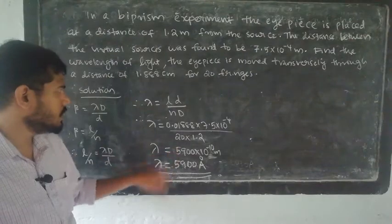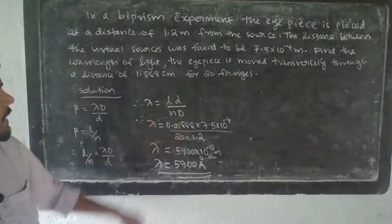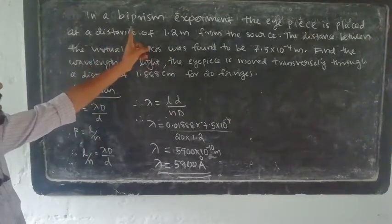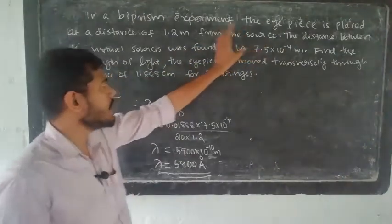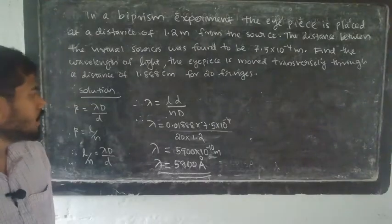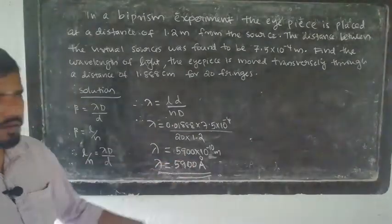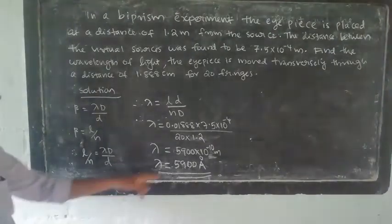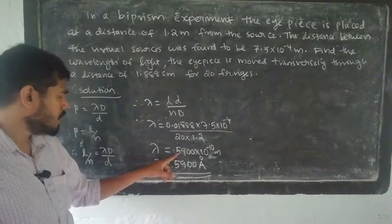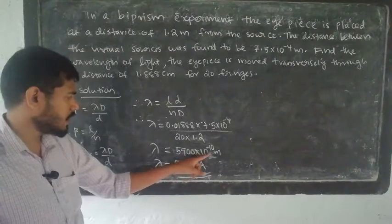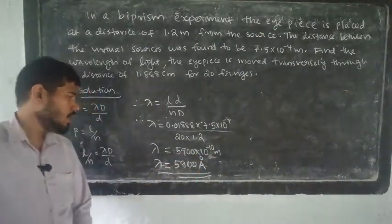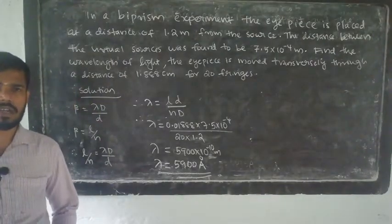The screen is placed at a distance of 1.2 meters from the source. We substitute the values and solve. Lambda is equal to 5900 into 10 raised to minus 10 meters, that is, lambda is equal to 5900 Angstroms. That is the wavelength of the light.